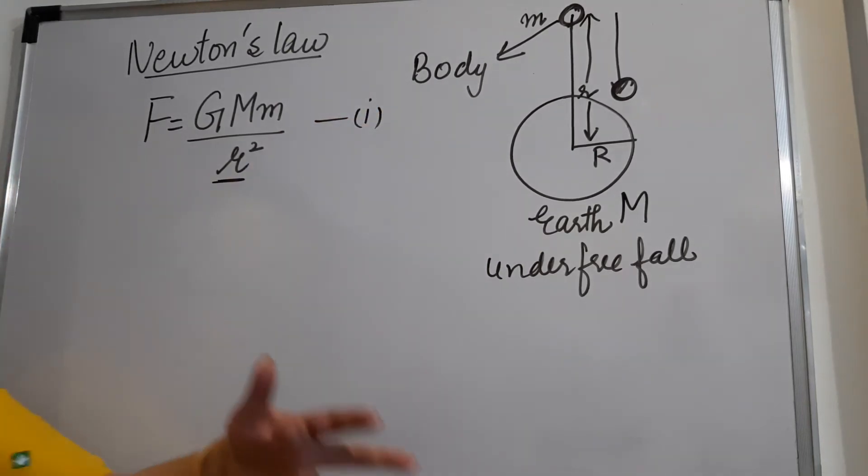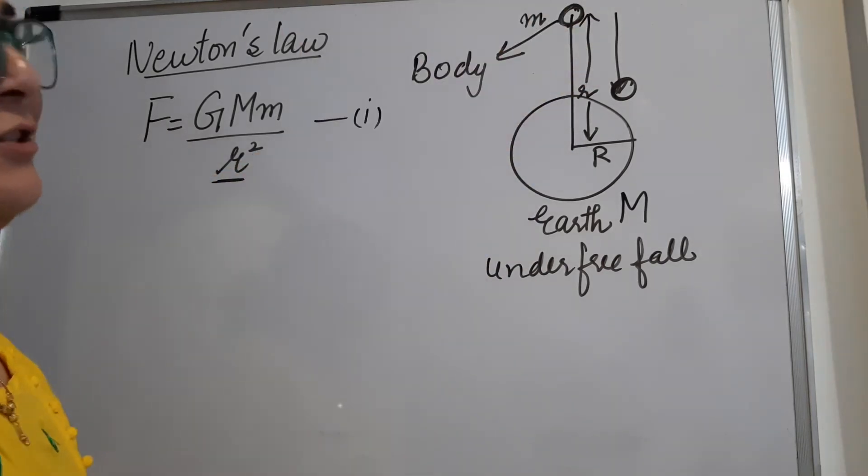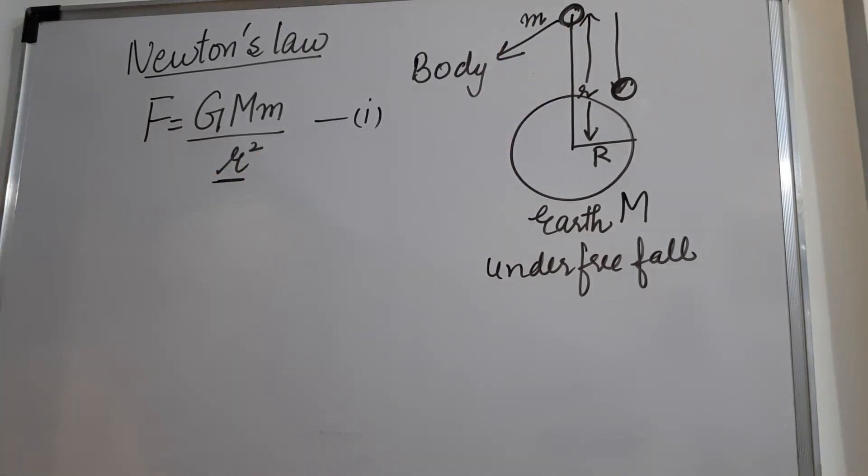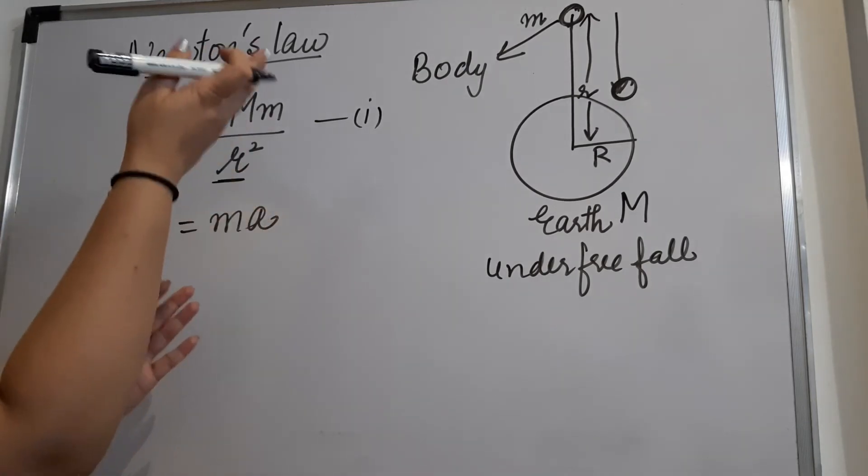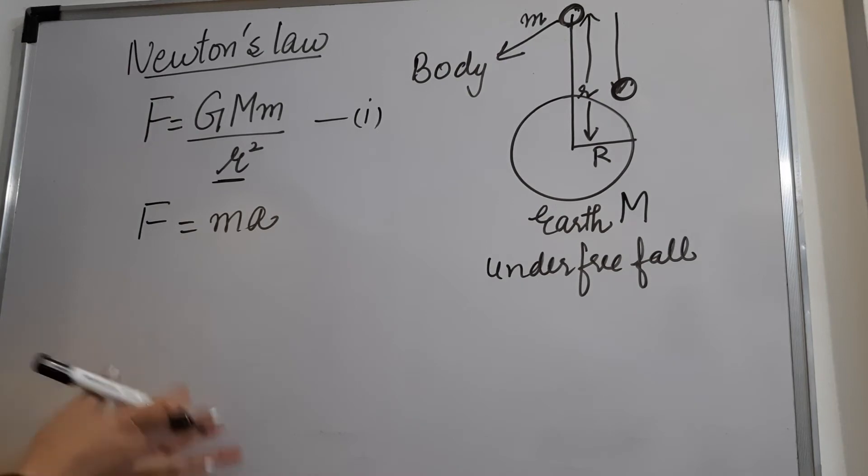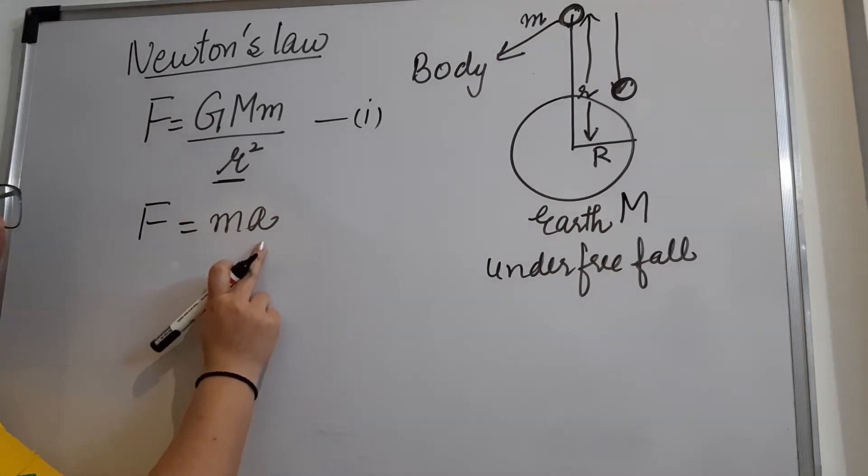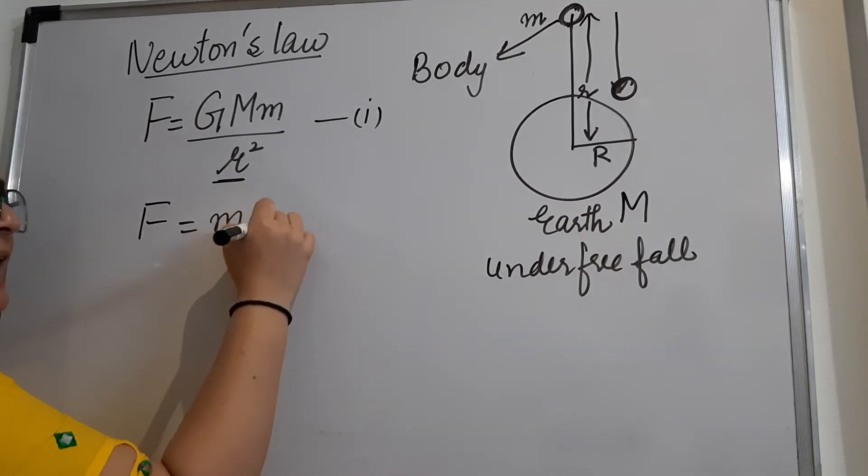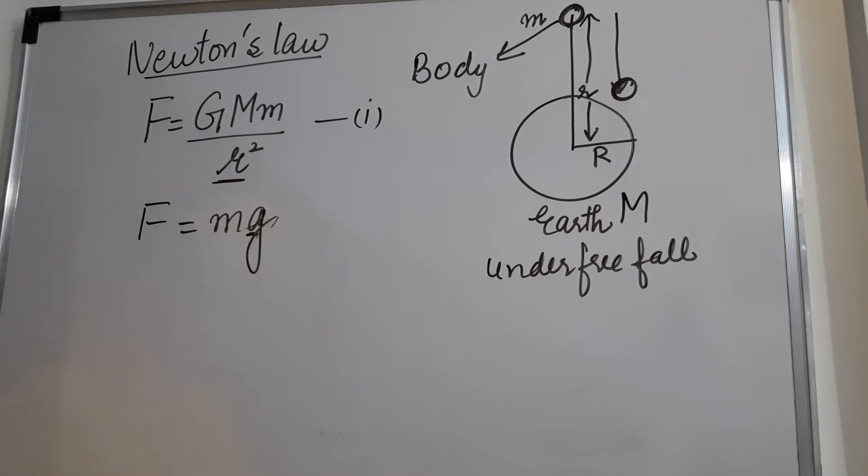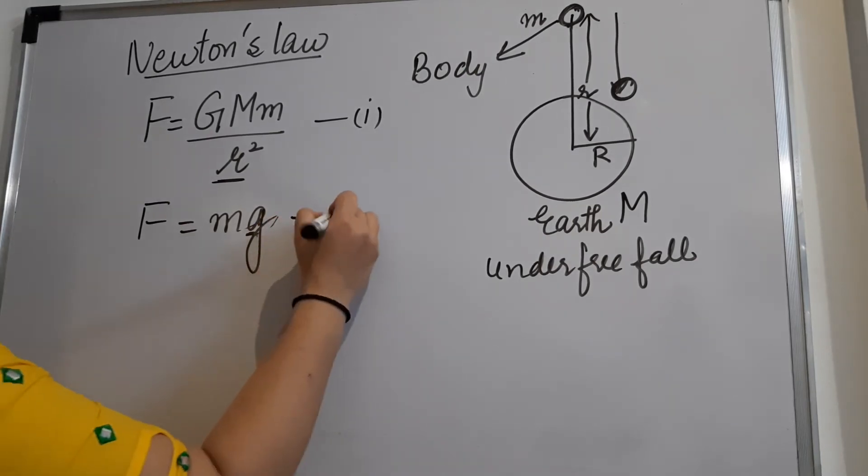Now, under the effect of gravity when the object will come down to the surface of the Earth, what does Newton's second law say? That F equals to mass into acceleration because this object is accelerating. It is coming down to the surface of Earth. But here, because we are very specific, we are talking about acceleration due to gravity. So here I can substitute this value of acceleration by g and I can call it as acceleration due to gravity. So the formula becomes F equals to mg. So this is the second equation that we have got.